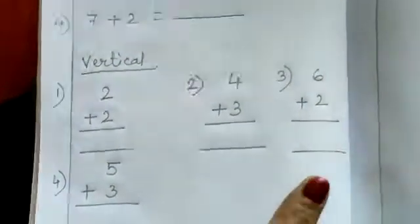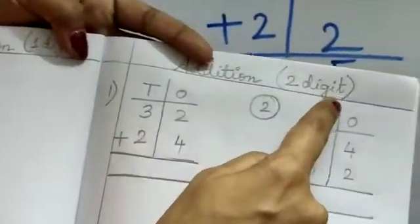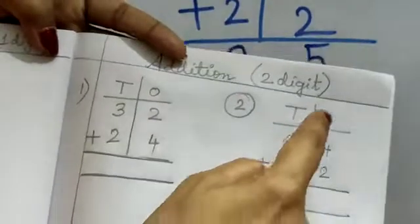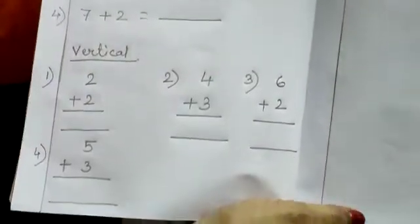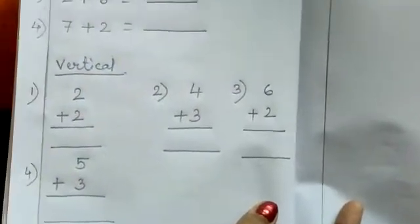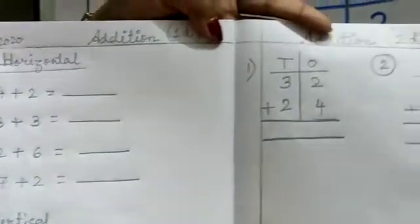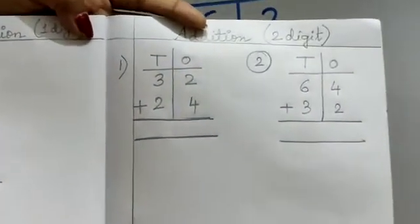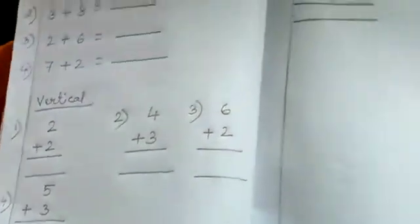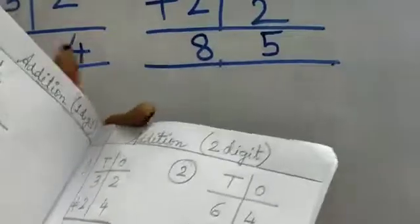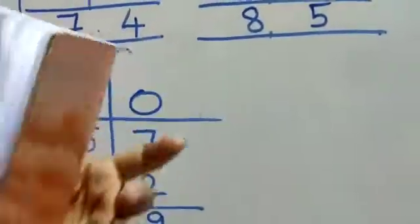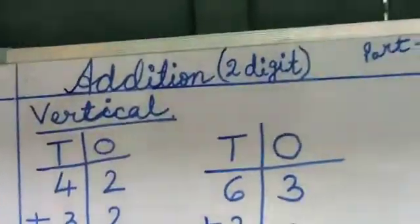Like this addition two digit. Today I have shown you. Like this in your copy. You will do. Whatever worksheet you will get. From there you will write in your school copy. Practice addition more and more. And it will be easier for you.